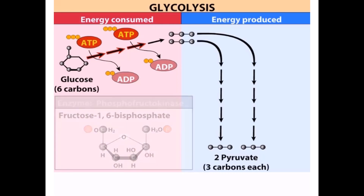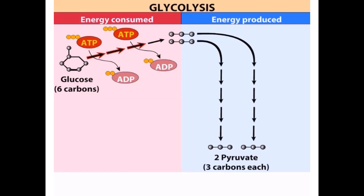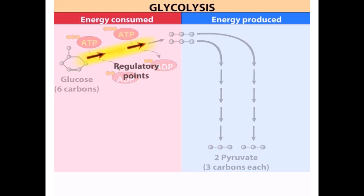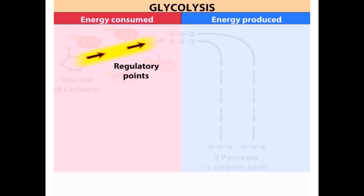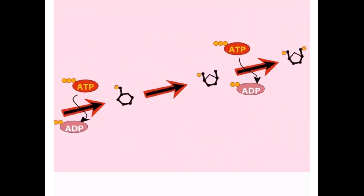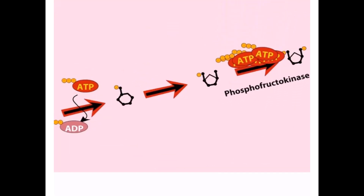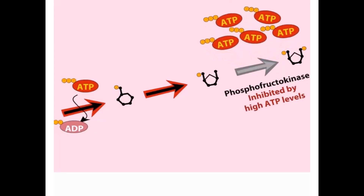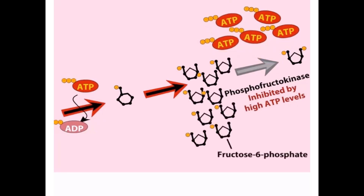The key control element is the enzyme phosphofructokinase, which is inhibited by high levels of ATP. Inhibition of phosphofructokinase results in an accumulation of fructose 6-phosphate. The reaction that produces fructose 6-phosphate is readily reversible, and therefore blockage at phosphofructokinase also results in accumulation of glucose 6-phosphate. High levels of glucose 6-phosphate in turn inhibit the enzyme hexokinase.